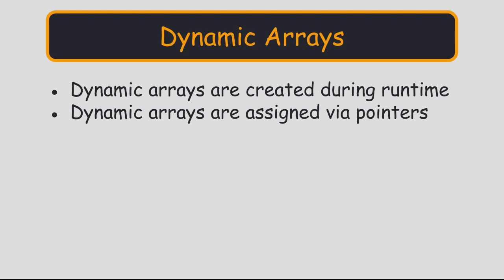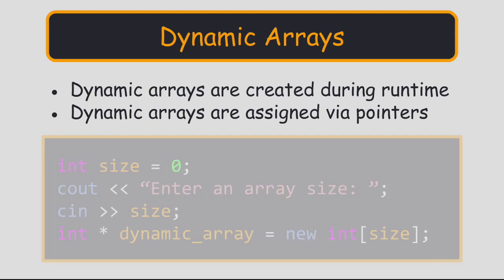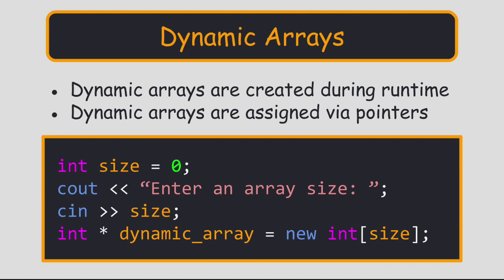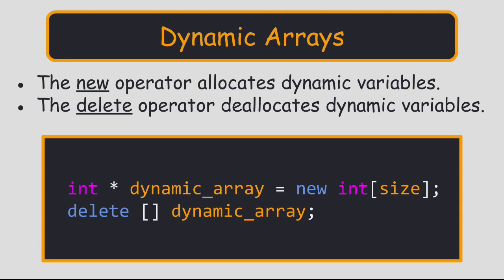We can create dynamic arrays using pointers. The following code accepts an array size from console input during runtime. Then it creates an array of that size. We use the keyword new when we create a dynamic variable. When we are done using the dynamic array, we have to deallocate its memory using the delete operator.